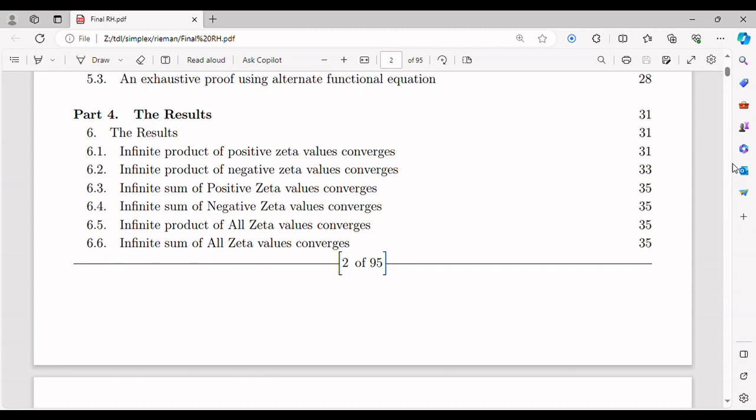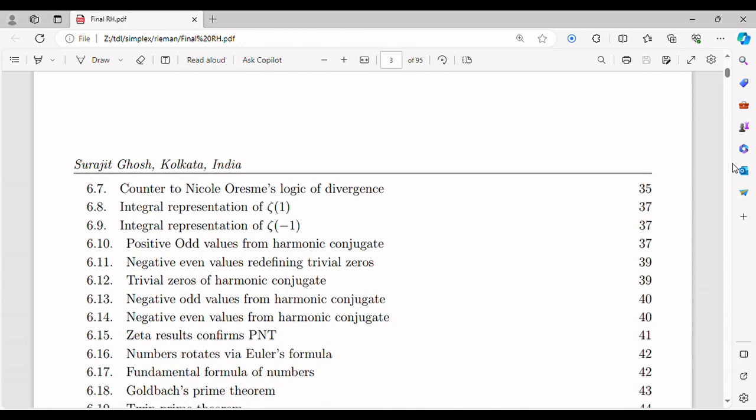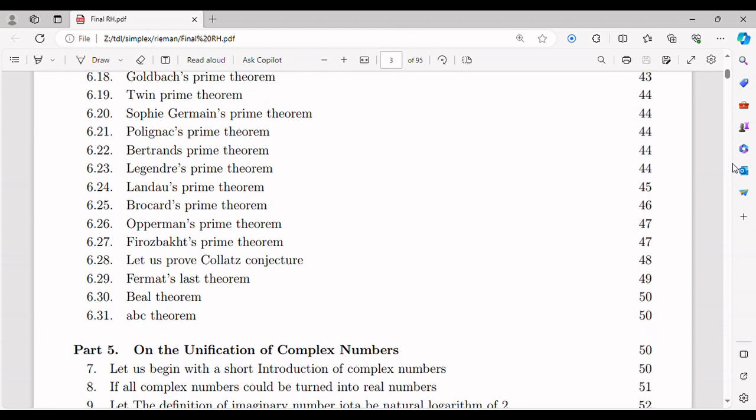It is well accepted that Riemann Hypothesis is the holy grail of mathematics. Proving the Riemann Hypothesis would have profound implications for number theory and prime number distribution. It would provide us with a deeper understanding of the distribution of prime numbers, and potentially unlock new mathematical insights.